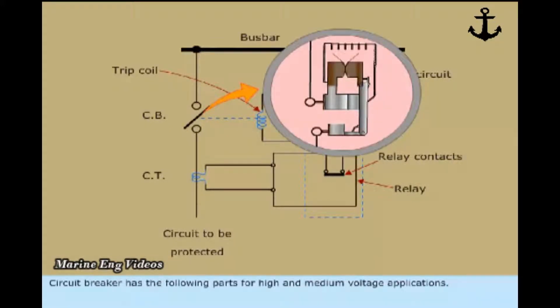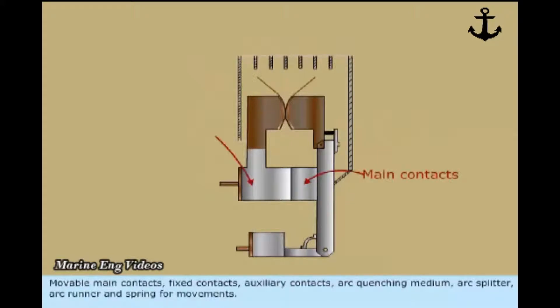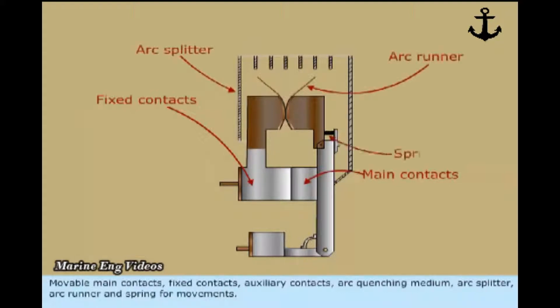Circuit breaker has the following parts for high and medium voltage applications: moveable main contacts, fixed contacts, auxiliary contacts, arc quenching medium, arc splitter, arc runner and spring for movements.